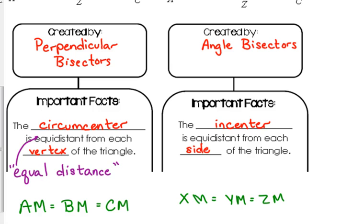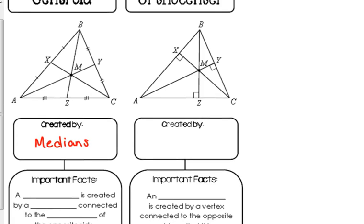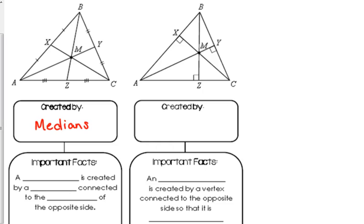The next one is what we call the centroid. The centroid is created by the medians. And here's how we create a median. A median is created by a vertex connected to the midpoint of the opposite side.